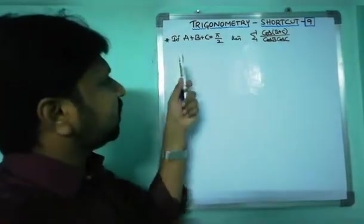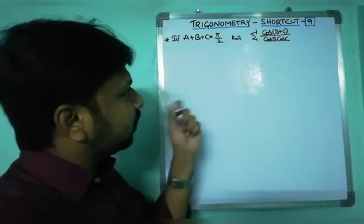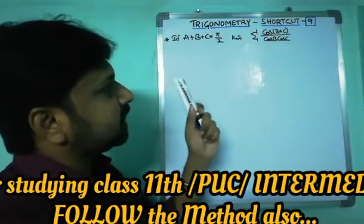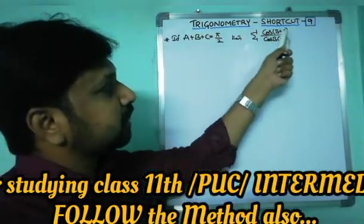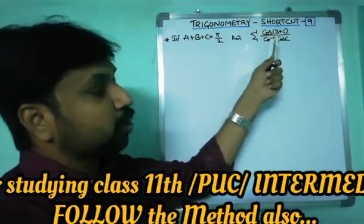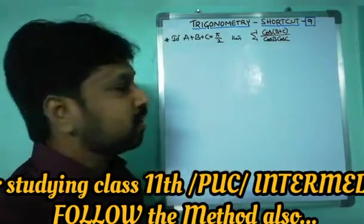The question is: if a plus b plus c is equal to 90 degrees, then sigma cos(b+c) divided by cos b into cos c — what is the result equal to?